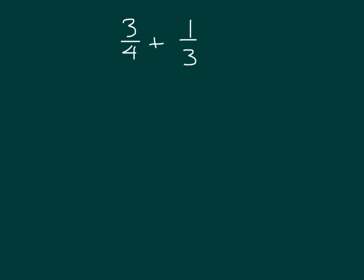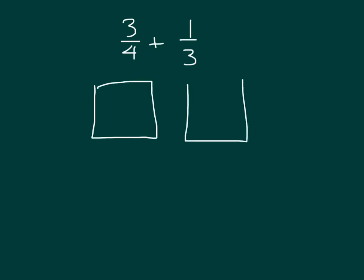Here we have 3-4ths plus 1-3rd. Let's draw area models for 3-4ths plus 1-3rd to see what that means. So we have 3-4ths first. We'll divide this into four parts, and we're looking at three of those parts: 1-4th, 2-4ths, and 3-4ths.